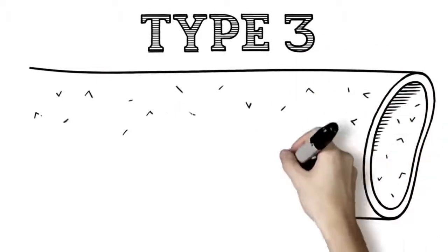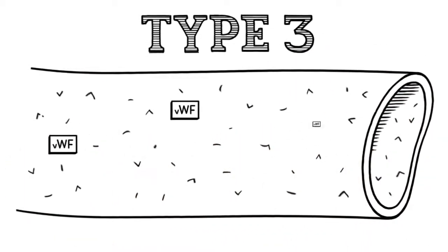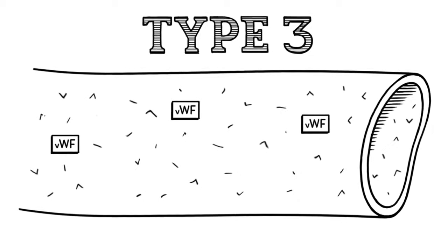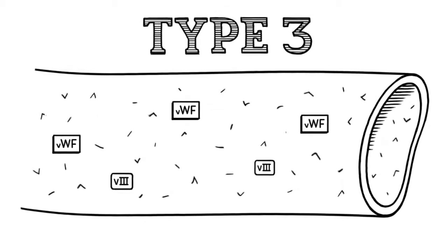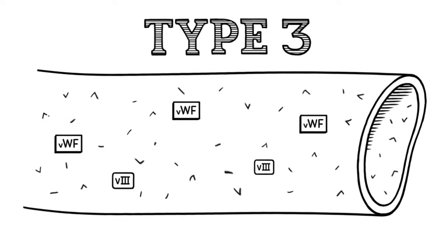In type 3 VWD, the body makes very little or no Von Willebrand factor and also has low levels of factor VIII. Type 3 is generally considered to be the most severe type of VWD.